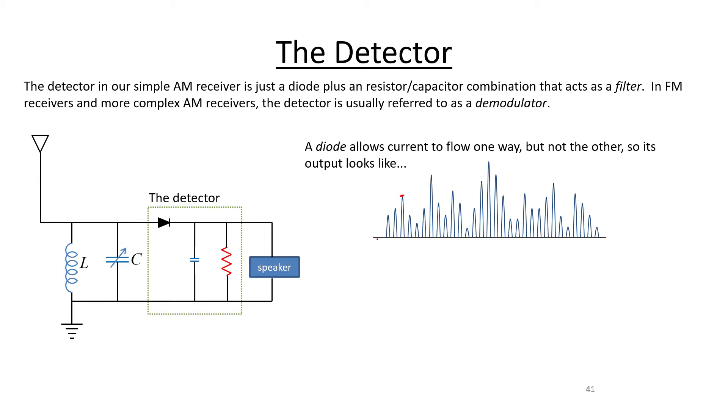What we need to do is actually recover the original audio information that was encoded in this amplitude modulation. That's where the second two components come in: this little capacitor and this resistor. They do filtering. They act as an electrical filter. What they're going to do is get rid of all of this high frequency stuff and leave us with this slowly, relatively slowly varying voltage-looking envelope on this thing.